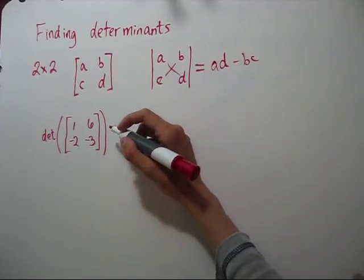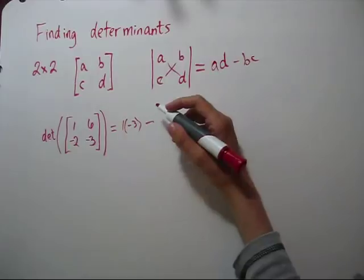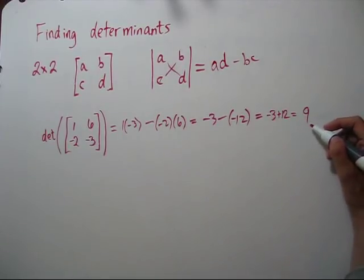So let's do this determinant. We're going to have 1 times negative 3 minus negative 2 times 6. So the determinant is 9.